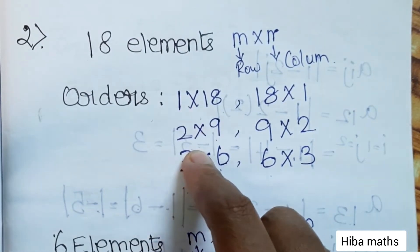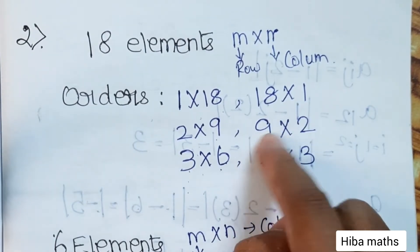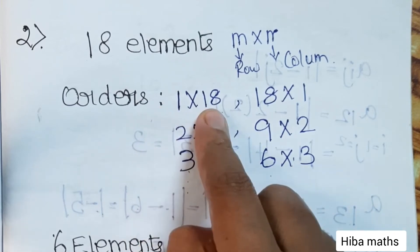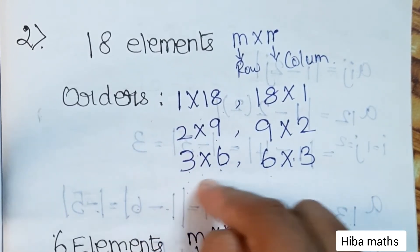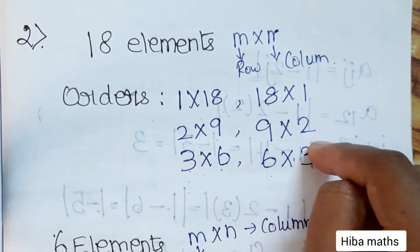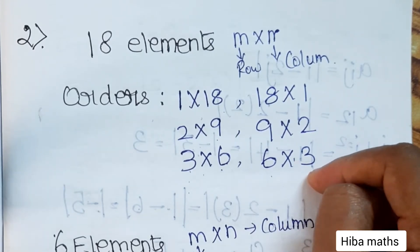These are the factors. First 1×18, then 2×9, then 3×6, then 9×2, then 18×1. So: 1 row 18 columns, 2 rows 9 columns, 3 rows 6 columns, 18 rows 1 column, 9 rows 2 columns, and 6 rows 3 columns. This is for 18 elements.